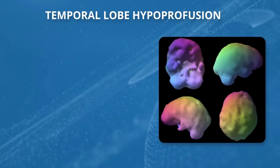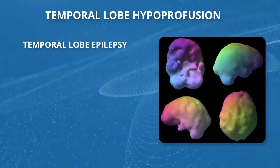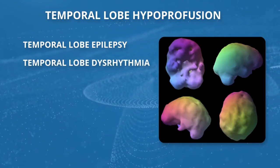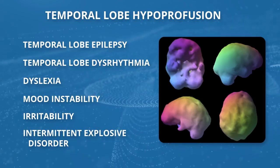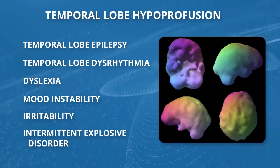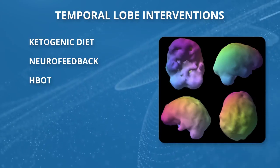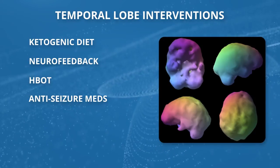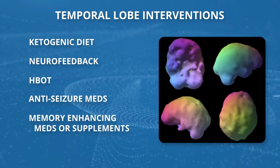Sometimes we'll see temporal lobe hypoperfusion — one or both temporal lobes are low — and it can go with temporal lobe epilepsy or something not quite as severe, temporal lobe dysrhythmia. We also see it in dyslexia, mood instability, and irritability. We've seen it in virtually every case of intermittent explosive disorder and in people who have illusions, like hearing the sound of bees buzzing. Treatment includes a ketogenic diet to decrease seizures, neurofeedback, hyperbaric oxygen, and anti-seizure medications like Lamictal, Neurontin, or Trileptal.